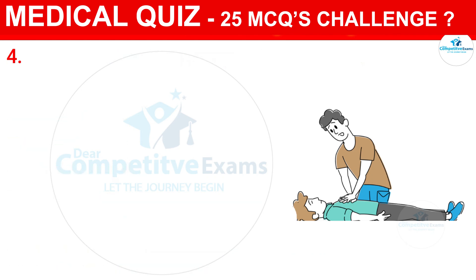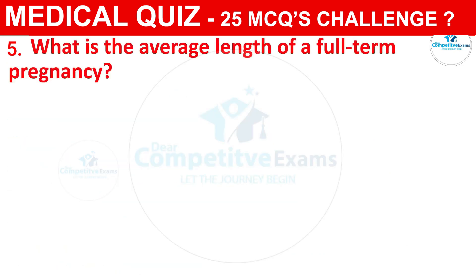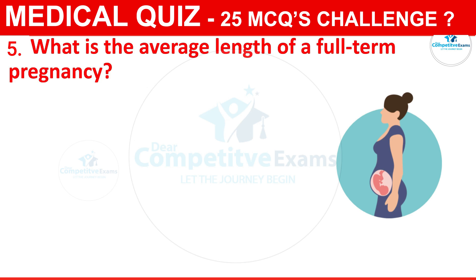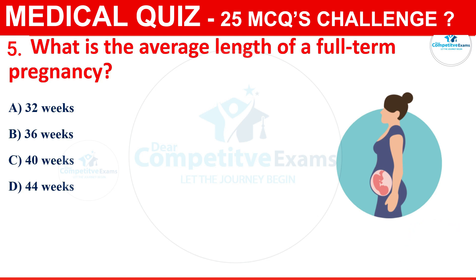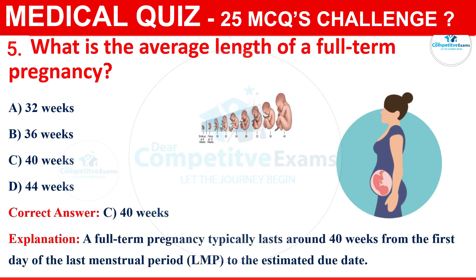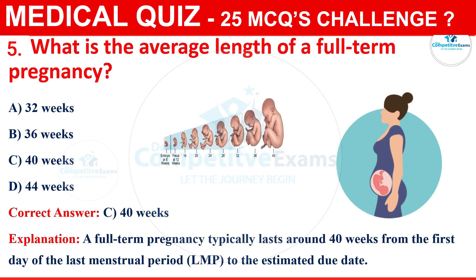Question 5: What is the average length of a full-term pregnancy? Your options are 32 weeks, 36 weeks, 40 weeks, or 44 weeks. The correct answer is C, i.e., 40 weeks. A full-term pregnancy typically lasts around 40 weeks from the first day of the last menstrual period (LMP) to the estimated due date.